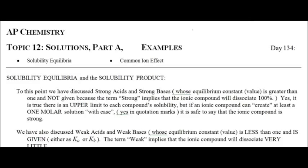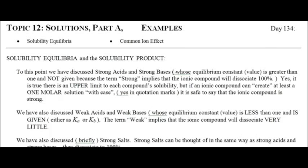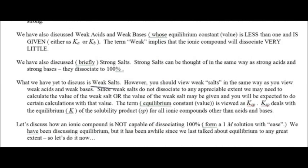Up to this point we've talked about strong salts, strong acids, and strong bases. The thing to recall about strong acids and strong bases is that they dissociate 100%. The things we're going to talk about today are salts that do not dissociate 100%. One way to know you're looking at a weak salt is that you have to know your solubility rules. Knowing the solubility rules is paramount to succeeding on the AP exam. If you're looking at a weak salt, you'll have some K value. Weak salts do not dissociate 100% and are considered not soluble under the solubility rules.